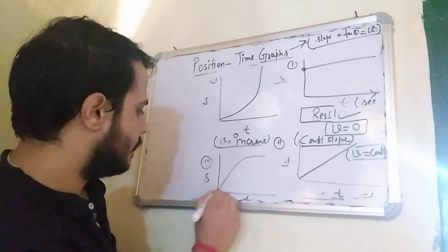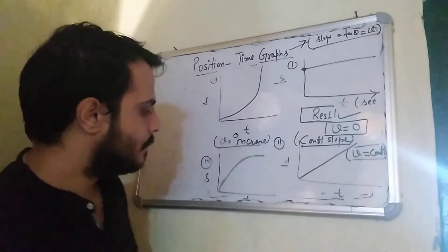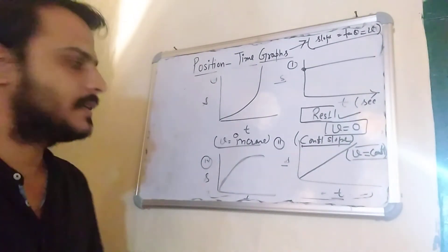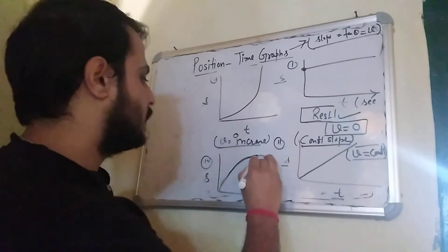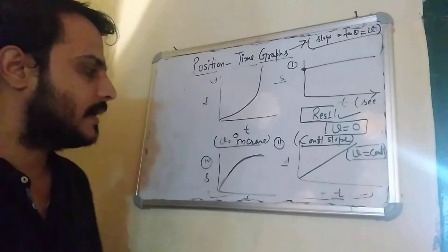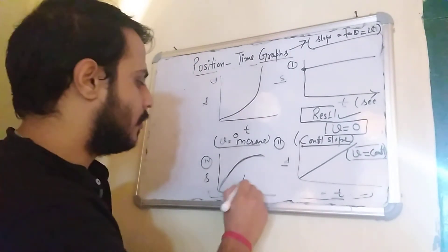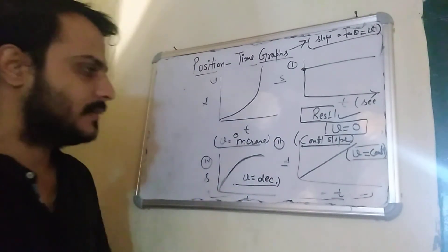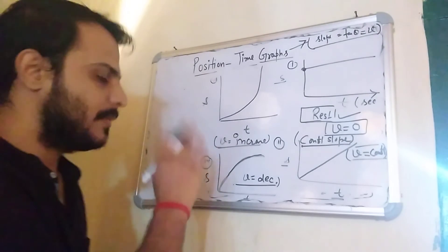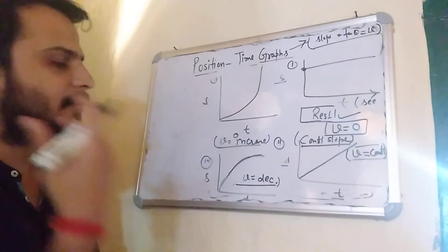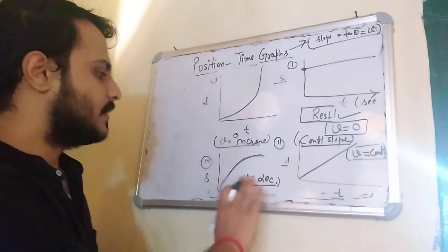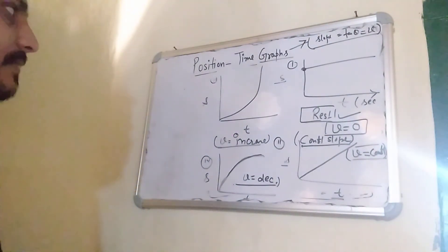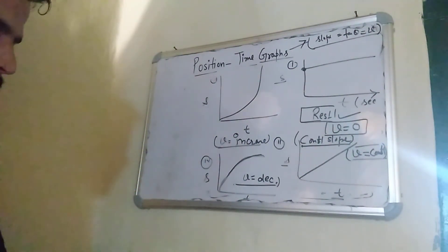The fourth graph shows a curve bending toward the time axis. The time is changing but position is not changing as fast, so this graph indicates that velocity is decreasing. The third graph showed velocity increasing, and this one shows velocity decreasing.